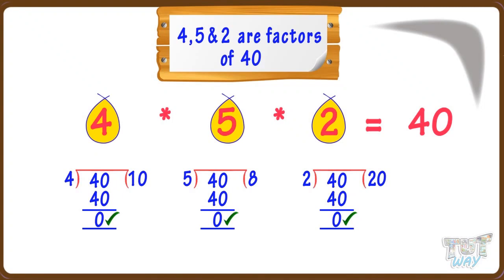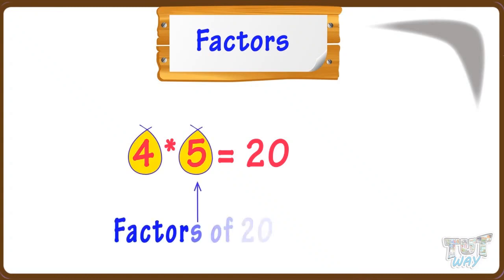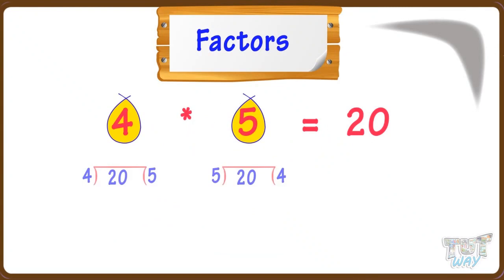Let's have a look at more examples. 4 × 5 = 20, so 4 and 5 are factors of 20, as 4 and 5 will divide 20 completely with no remainder left.